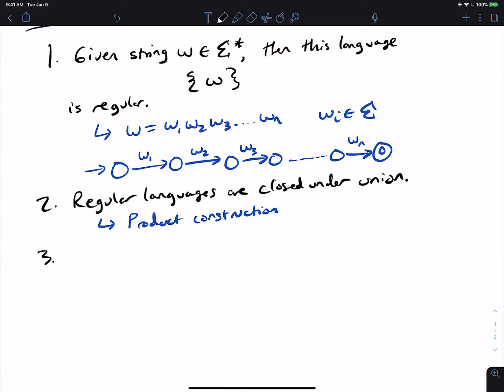Another thing here is the language of just a single string. So here we're given string w. So the language which just has the single string w is regular. And what is the justification for this? Well, we have an NFA in part one above for that language. So we have an NFA above for that language. And we know that NFAs and DFAs are equivalent. So the language which just has a single string in it is regular.